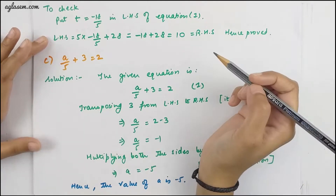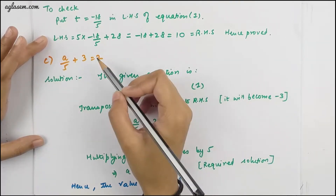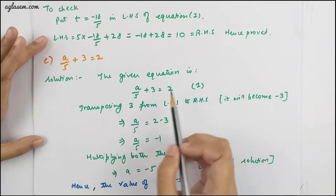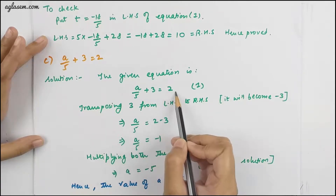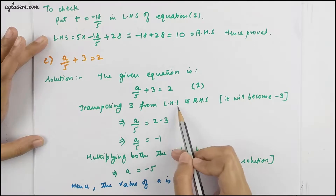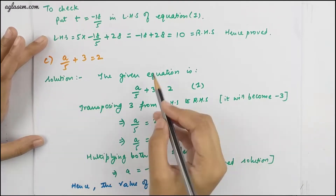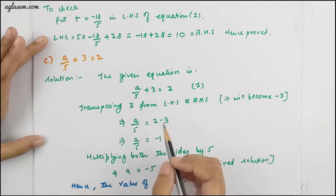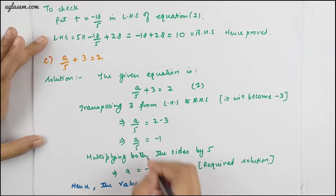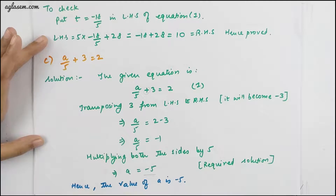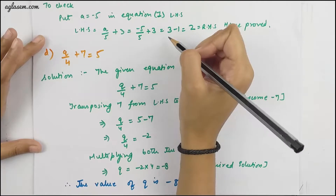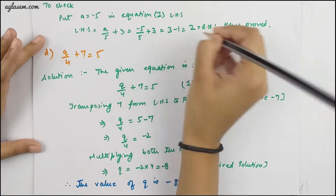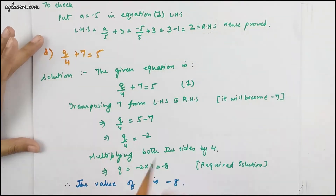The C part is a/5 + 3 = 2. Transposing 3 from LHS to RHS, the sign changes from plus to minus, giving us the value of a = −5. Hence the value of a is −5. To check, put a = −5 into the given equation — LHS equals RHS. Hence proved.